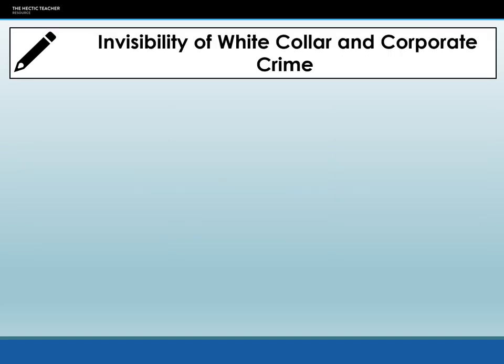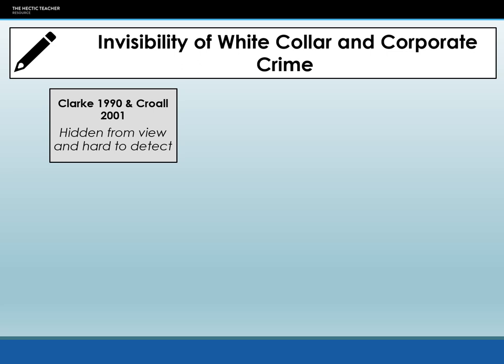So why does white collar and corporate crime seem more invisible and less likely to be prosecuted? The first point, put forward by Clark in 1990 and Corral in 2001, is simply that white collar and corporate crime is harder to detect — it's not obvious. Somebody breaks into your house: it's obvious. Somebody beats you up: it's obvious. Somebody embezzles a couple of thousand pounds from your business? It could be an accounting error, maybe a decimal point in the wrong place. It's not as easy to see that a crime has taken place.